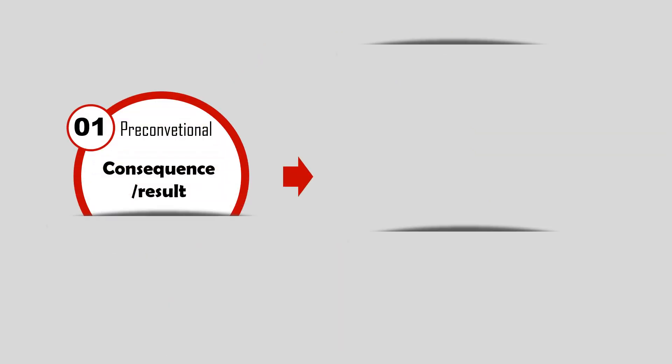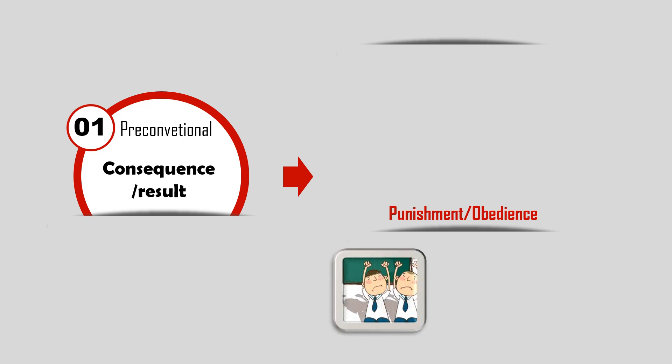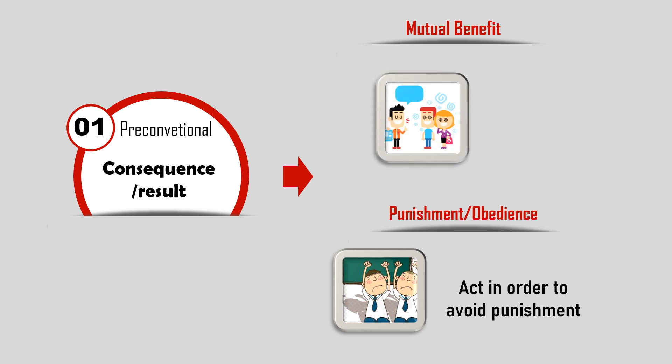Stage 1: Punishment or Obedience. One is motivated by fear of punishment; he will act in order to avoid punishment. Stage 2: Mutual Benefit. One is motivated to act by the benefit that one may obtain later — you scratch my back and I'll scratch yours.